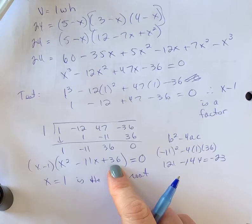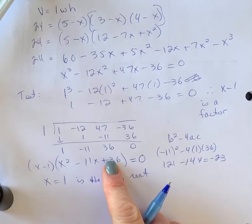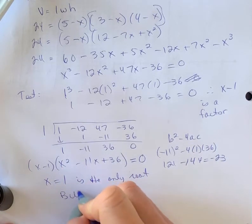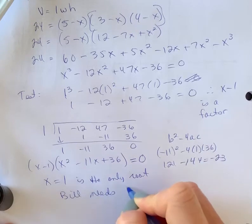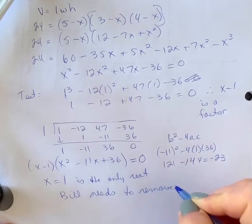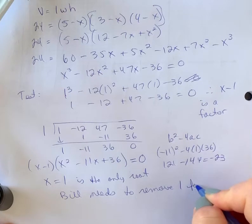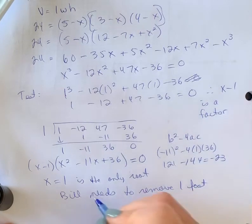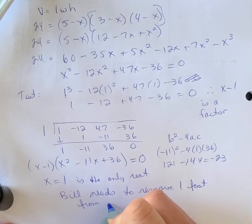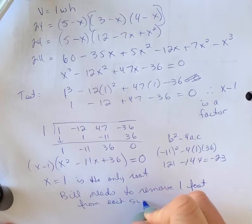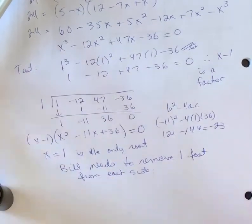There is no x values from this part of the polynomial. So Bill needs to remove one foot from each side. You could do a quick check on this one.